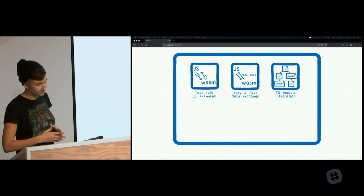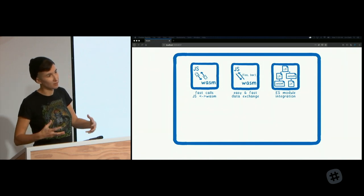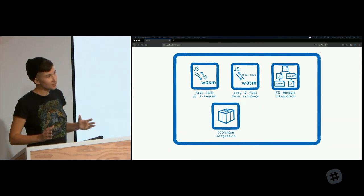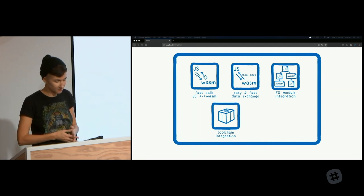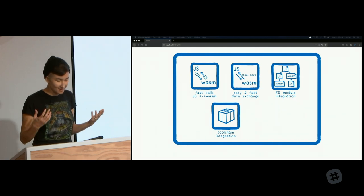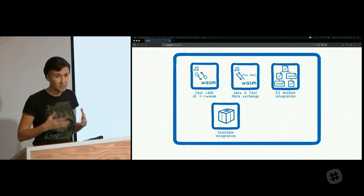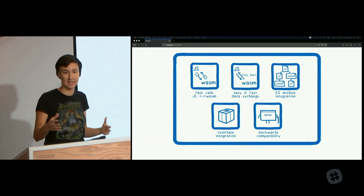We also need to integrate with ES modules — right now you can't import and export with WebAssembly modules, which means WebAssembly won't be part of your JavaScript module graph. We also need ways to distribute and bundle these modules. What is the NPM for WebAssembly? What about Webpack or Parcel? These modules shouldn't look any different to people using them, so there's no need to create a whole other ecosystem. We also need support for older browser versions, even those that don't know what WebAssembly is, like IE11.